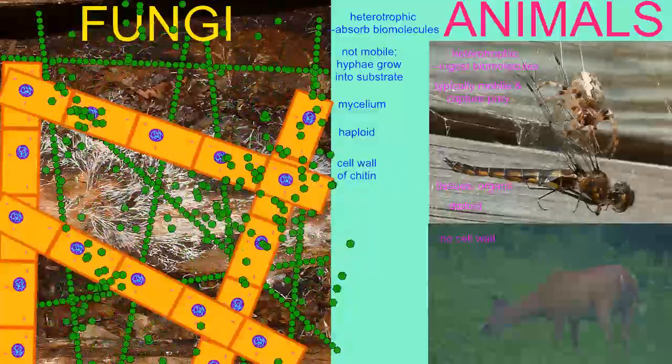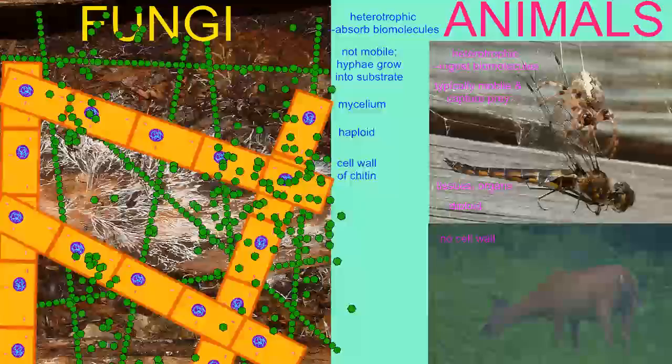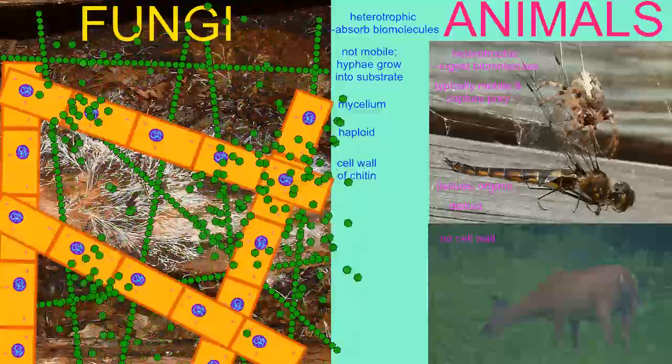Fungal cells possess a cell wall of chitin, while animal cells possess no cell wall.